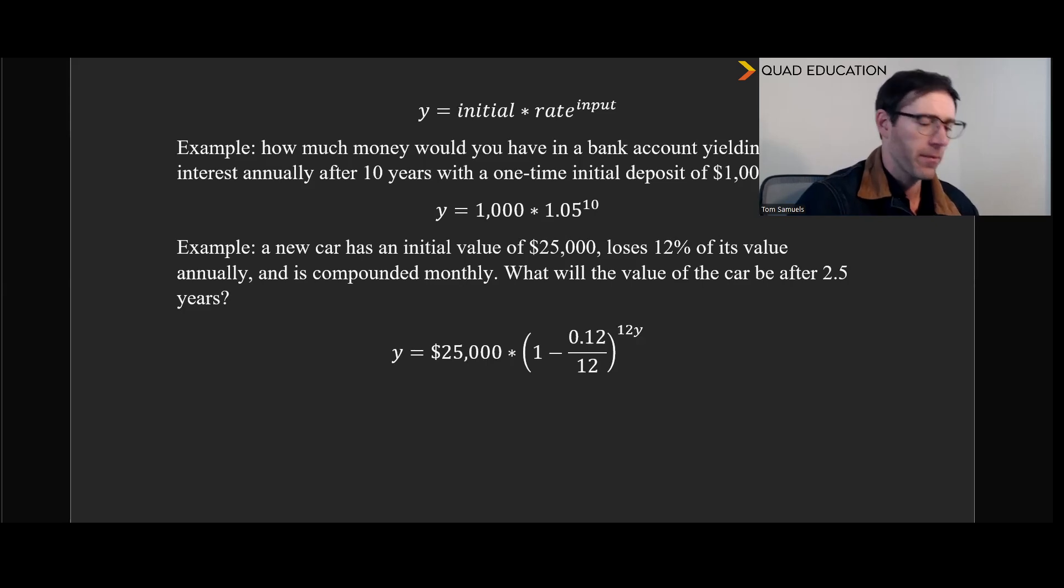And in this second example here, we add a slight bit of complexity. We see a new car has an initial value of $25,000 and loses 12% of its value annually, and it is compounded monthly. So what that means is basically that 12% annual decay happens in little chunks every month. And so instead of being, if you lose 12% of your value, you've got 88% of your value left every year. Instead of it being 88 to the power of one year, we're instead doing that 12 times a year, but at one twelfth of the rate.